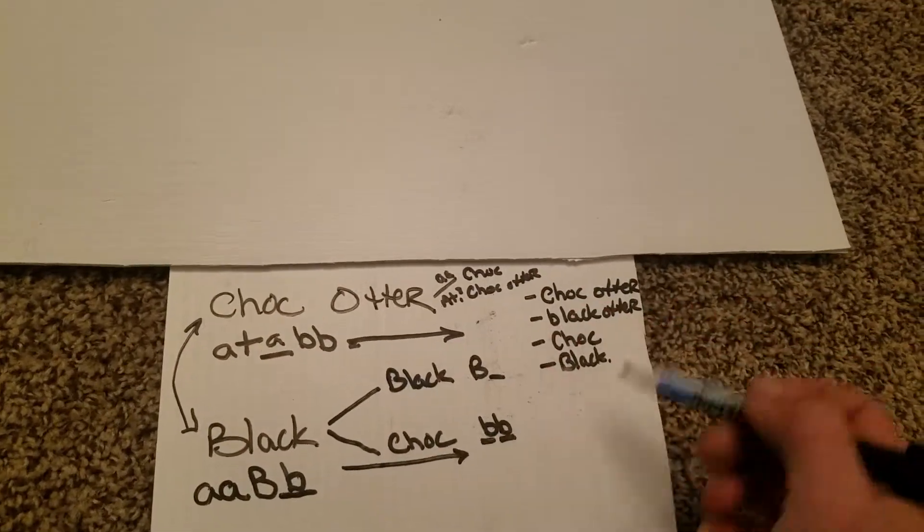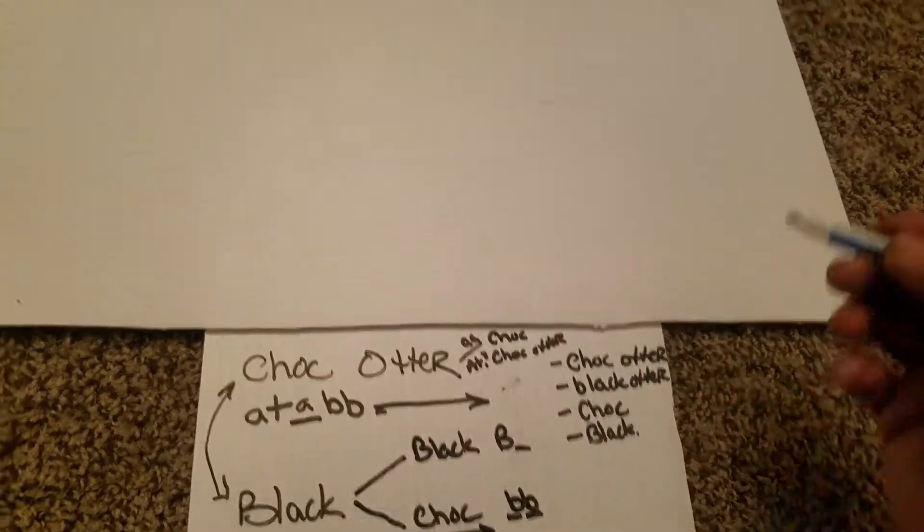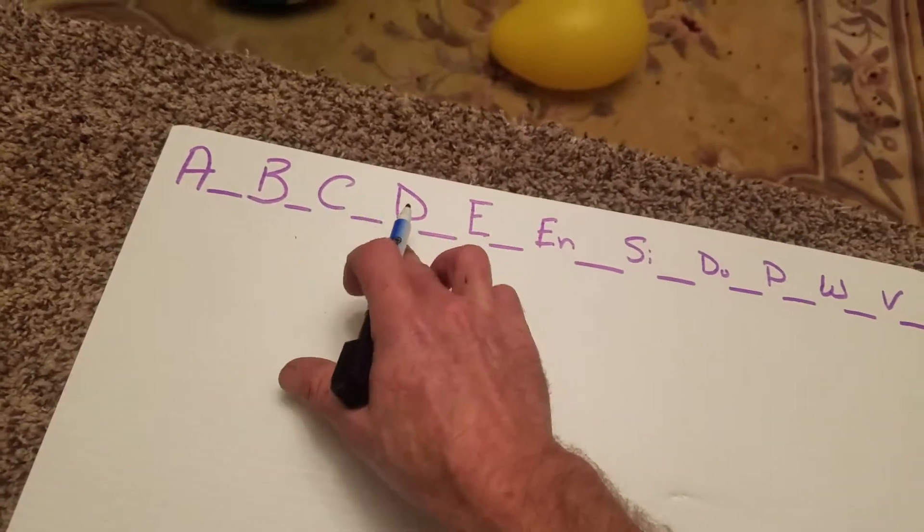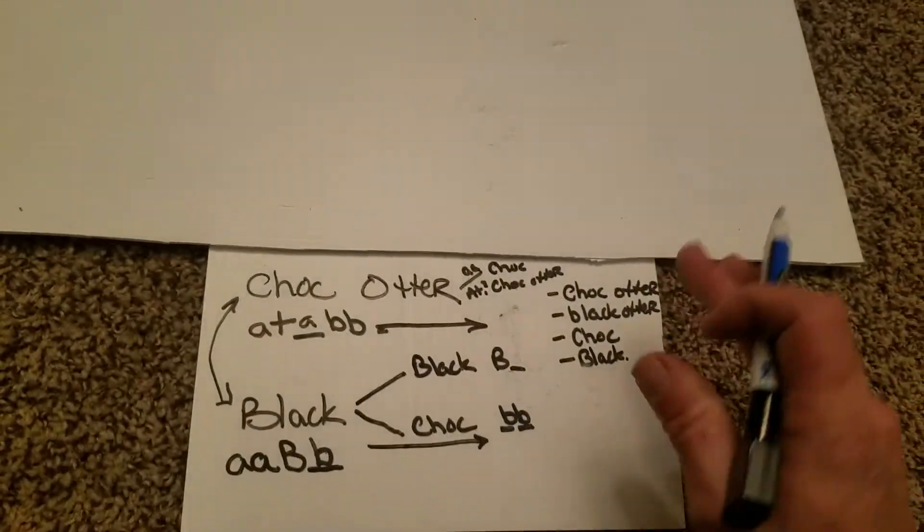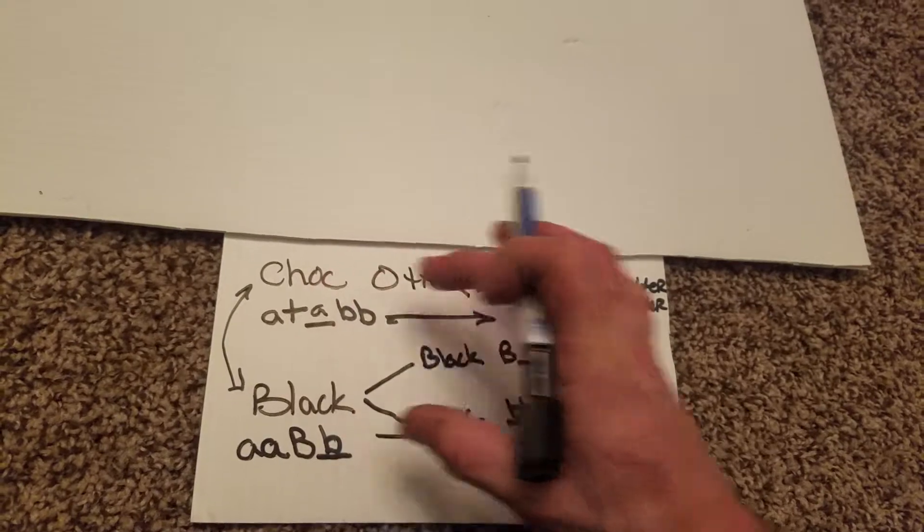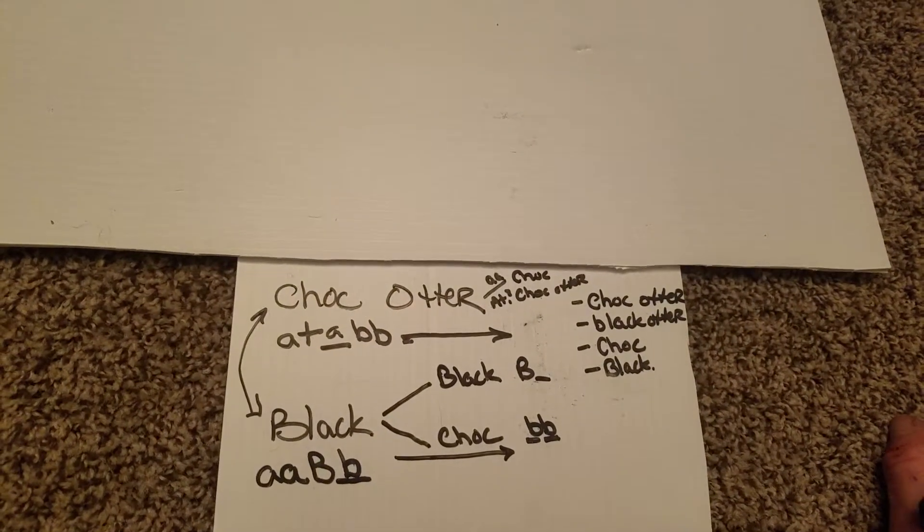Now this could also translate further down the string, and we'll get into that when we get into C and D. But right now, we're just talking about the first two locus points of the genetic string.